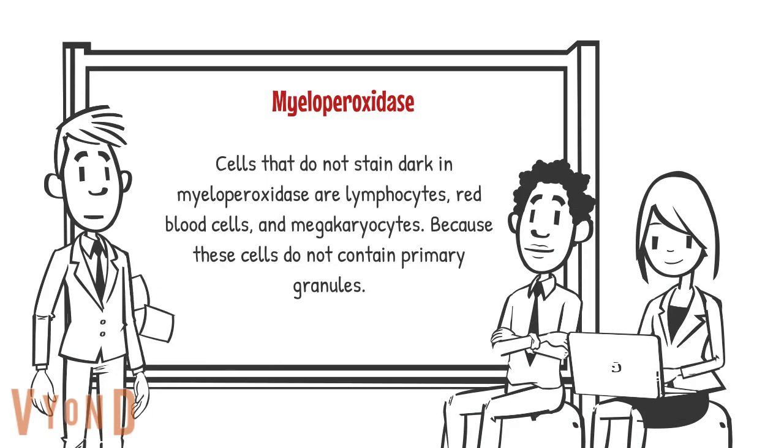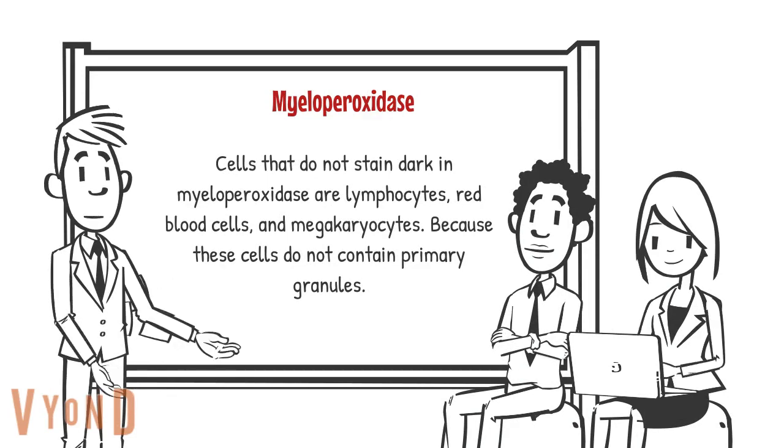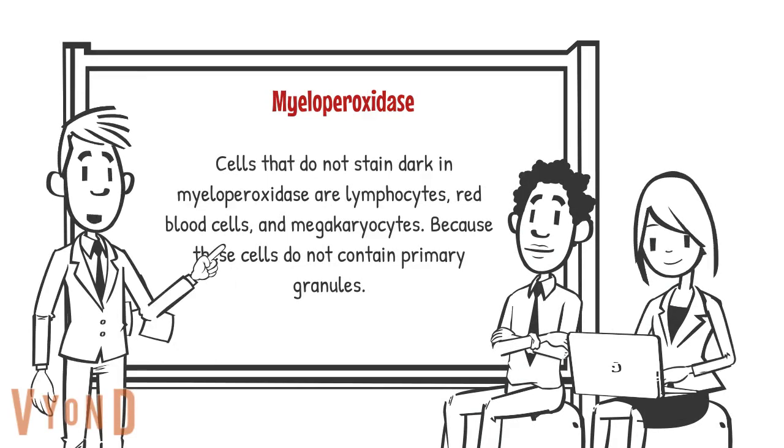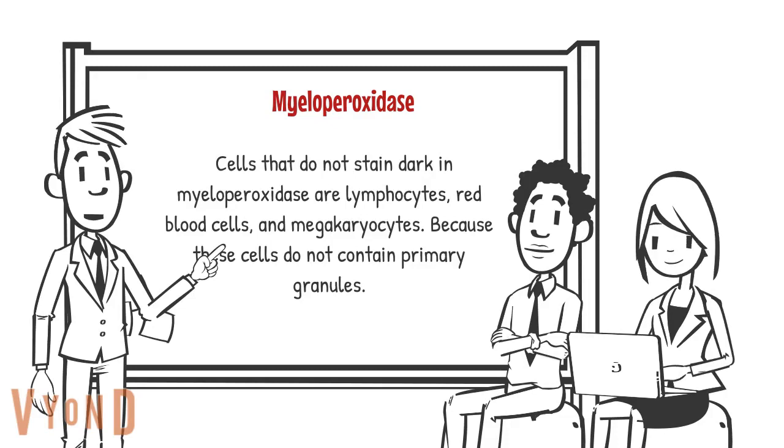Cells that do not stain dark in myeloperoxidase are lymphocytes, red blood cells, and megakaryocytic cells, because these cells do not contain primary granules.